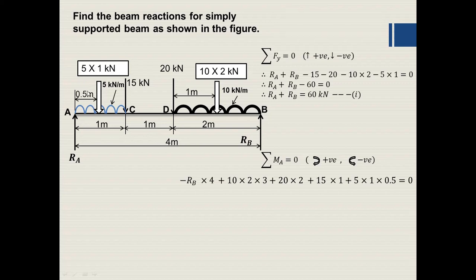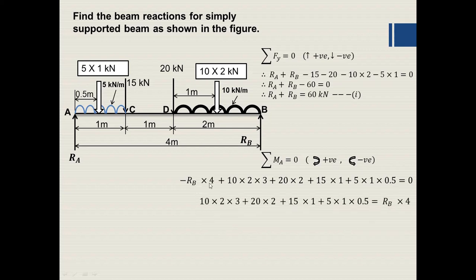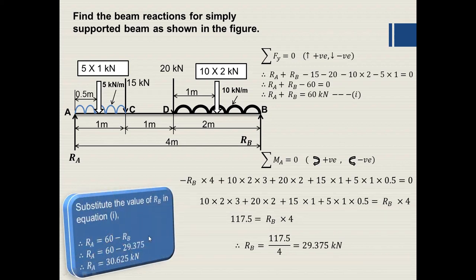Transferring −RB×4 to the other side, we get RB = 117.5 divided by 4, which equals 29.375 kilonewton. Substituting back into equation 1: RA = 60 − RB = 60 − 29.375 = 30.625 kilonewton. In this way we can find the beam reactions for a simply supported beam carrying point loads and UDL. Thank you very much for watching.